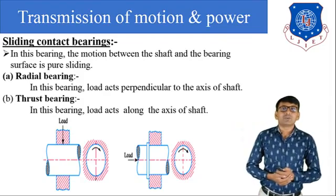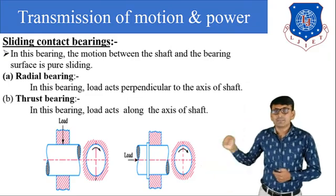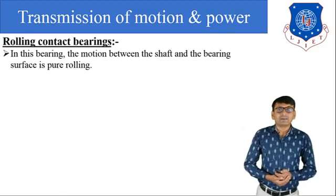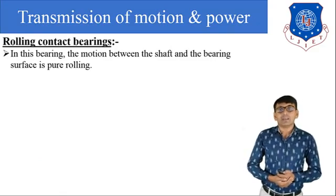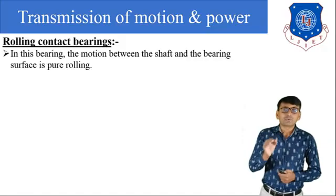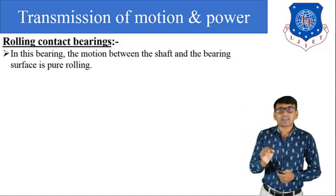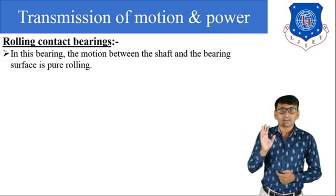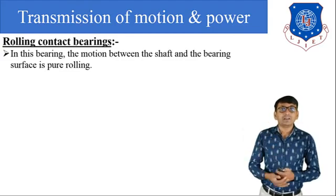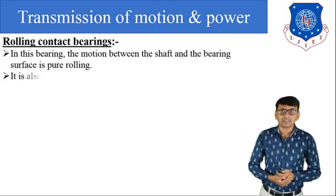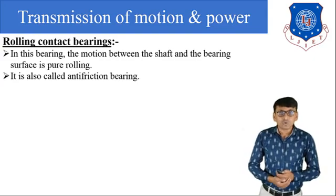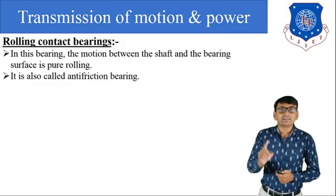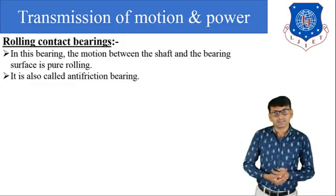Now the second type is rolling contact bearing. In this bearing, the motion between the shaft and bearing surface is pure rolling. It is also called an anti-friction bearing because in this bearing there is a very small amount of friction.